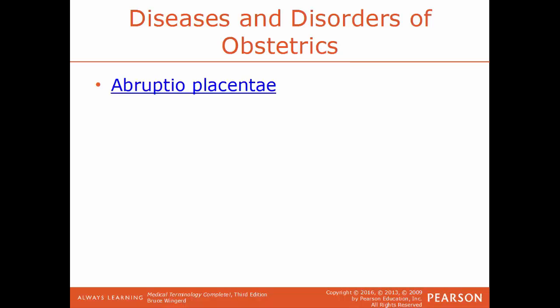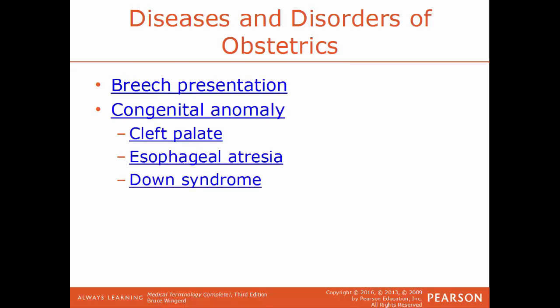Specific diseases and disorders of obstetrics: abruptio placentae is the premature separation of the placenta from the uterus — not common but a very serious complication of pregnancy. Breech presentation refers to the position of the fetus during birth — instead of coming out head first, it comes out either feet first or buttocks first. A congenital anomaly, another term for a birth defect, is any structural or functional abnormality or malformation present at birth.